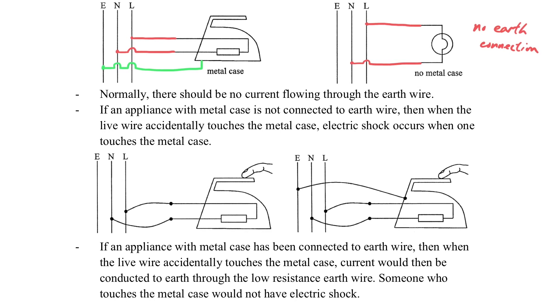Normally there should not be any current flowing through the earth wire. It is not related to making the electrical appliance work, but it is useful if the live wire is broken and accidentally touches the metal case.